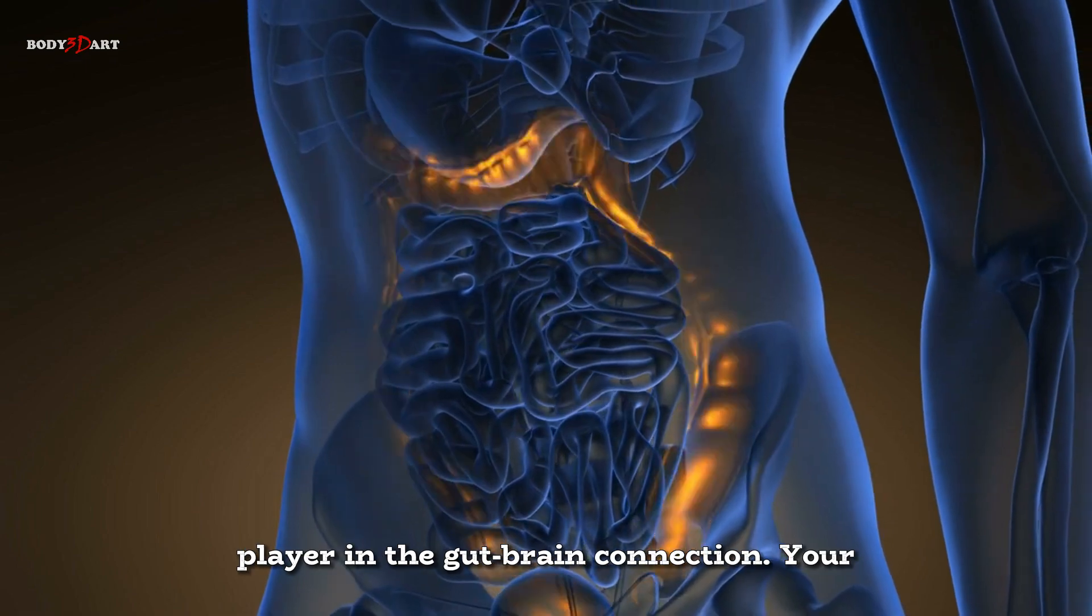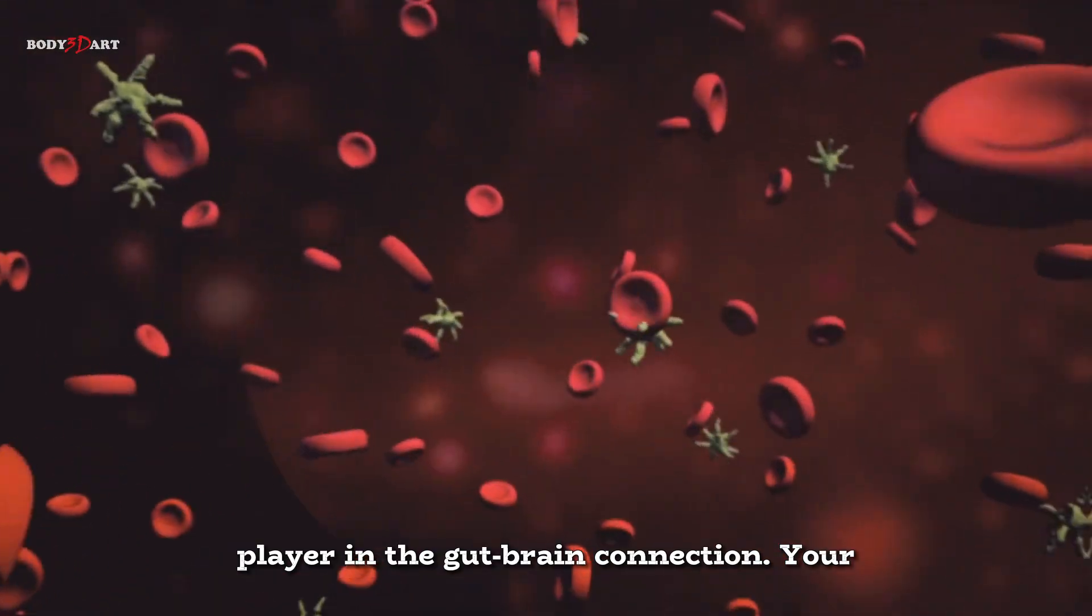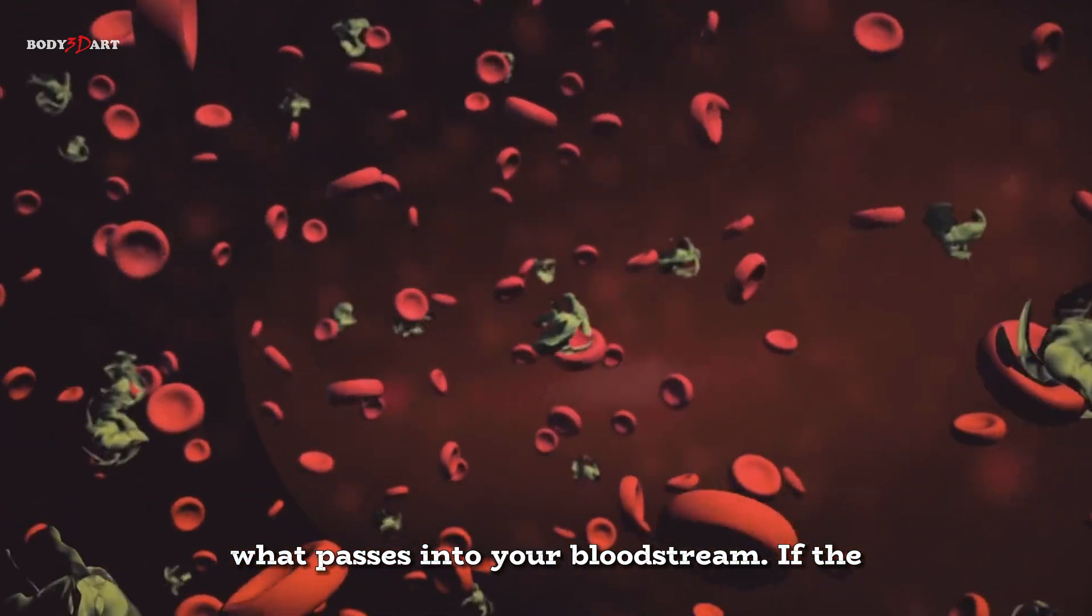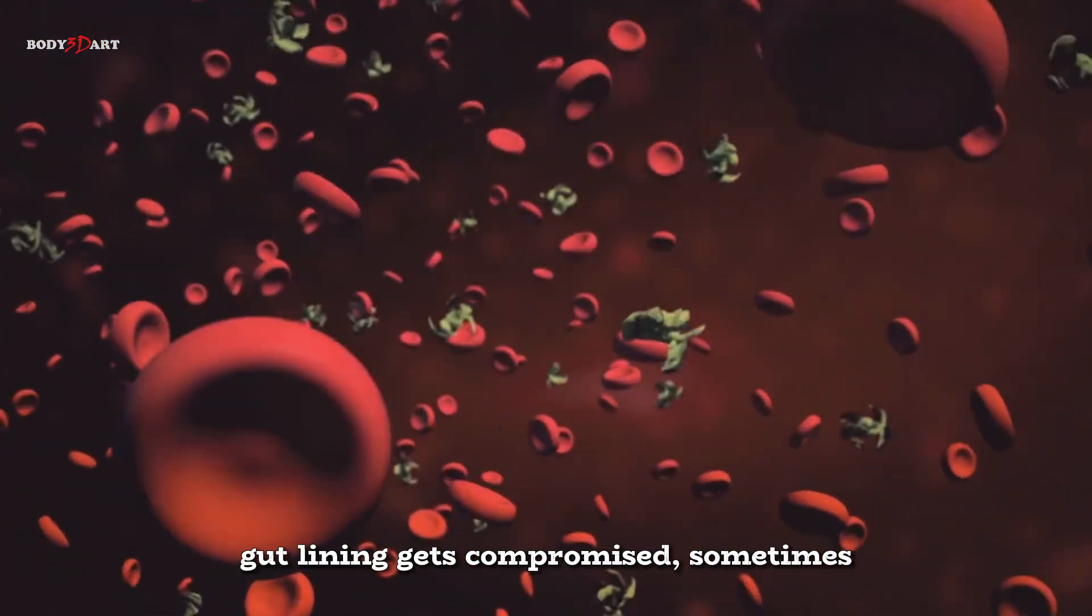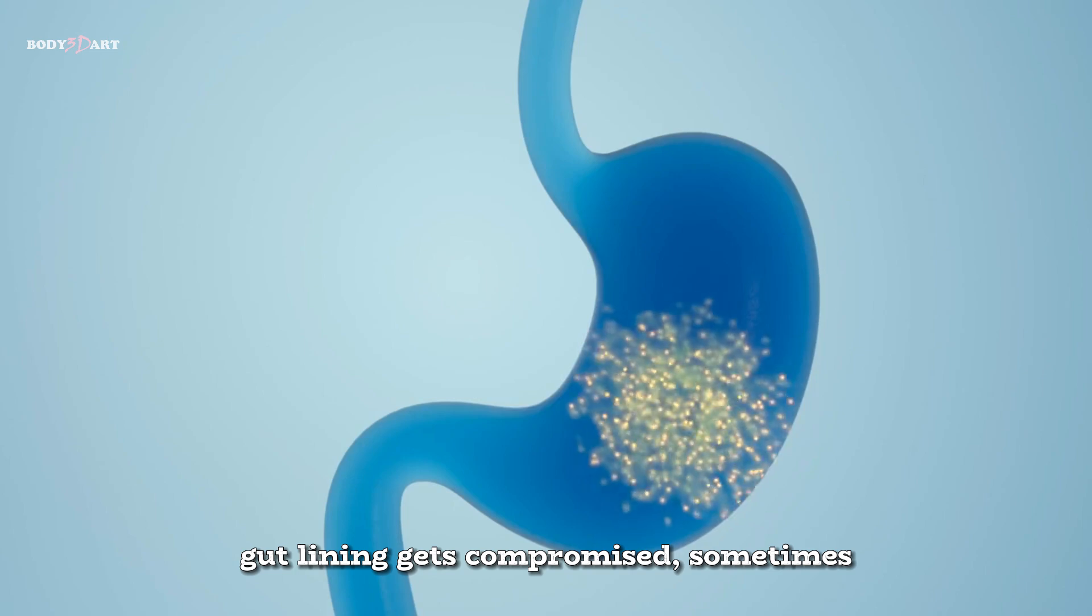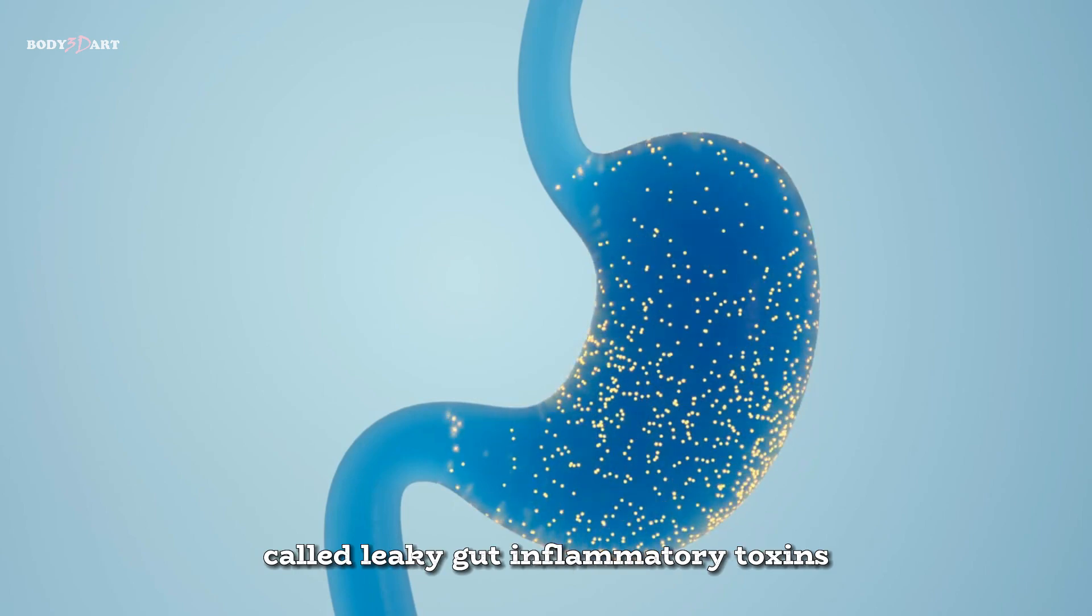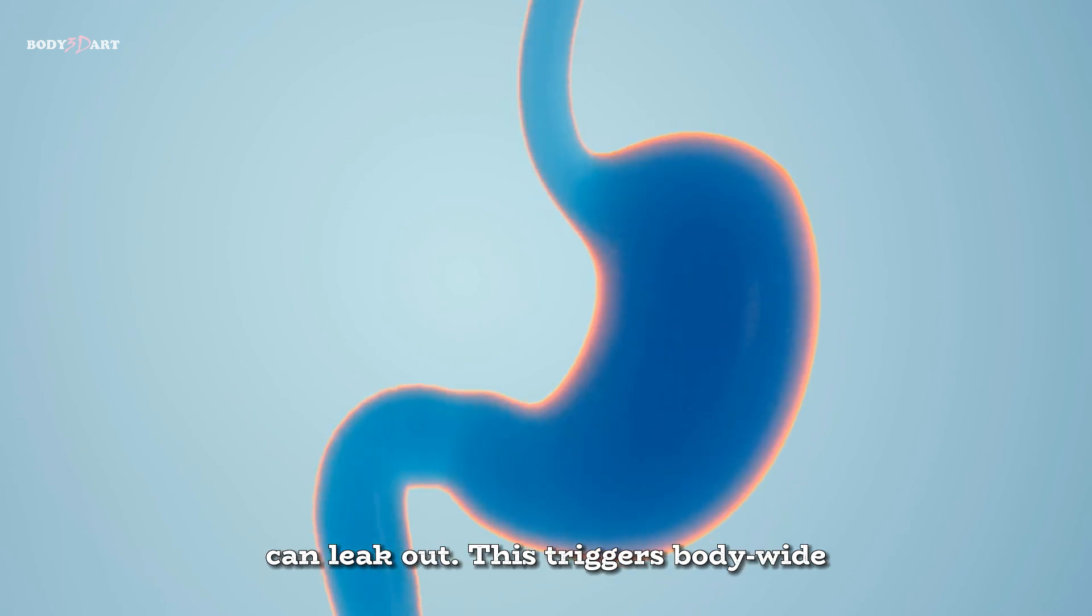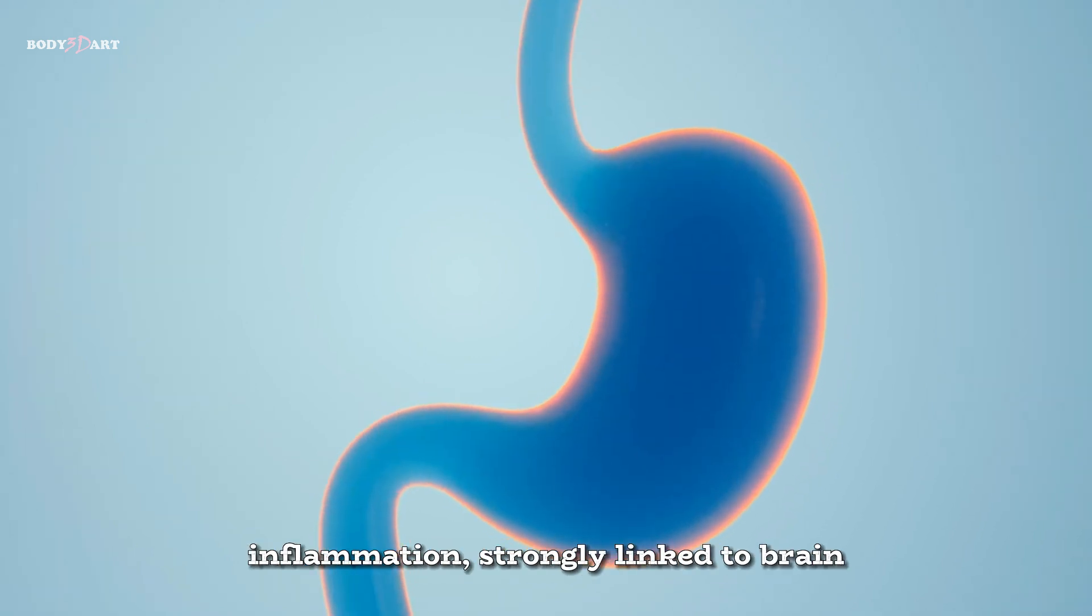Inflammation is another key player in the gut-brain connection. Your gut microbes are gatekeepers, controlling what passes into your bloodstream. If the gut lining gets compromised - sometimes called leaky gut - inflammatory toxins produced by certain bacteria can leak out. This triggers body-wide inflammation, strongly linked to brain disorders like depression, dementia and schizophrenia.